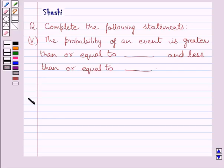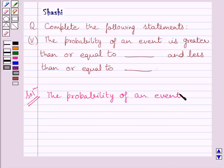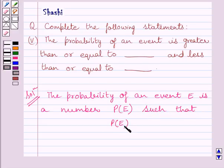Let us now start with the solution. First of all, let us understand that the probability of an event E is a number P(E) such that P(E) is greater than or equal to 0 and less than or equal to 1.